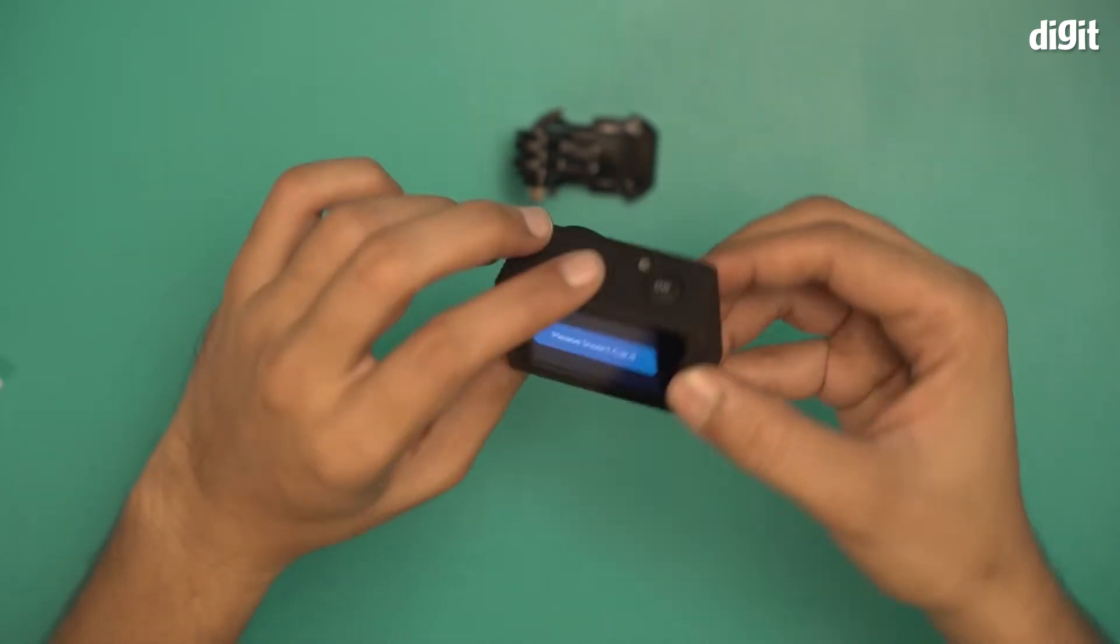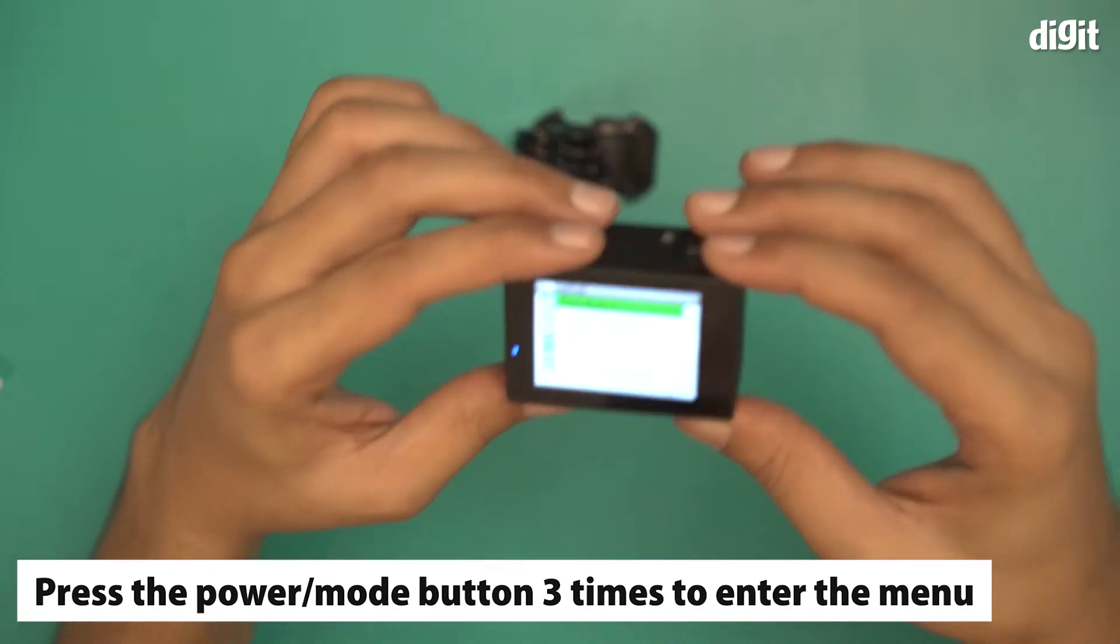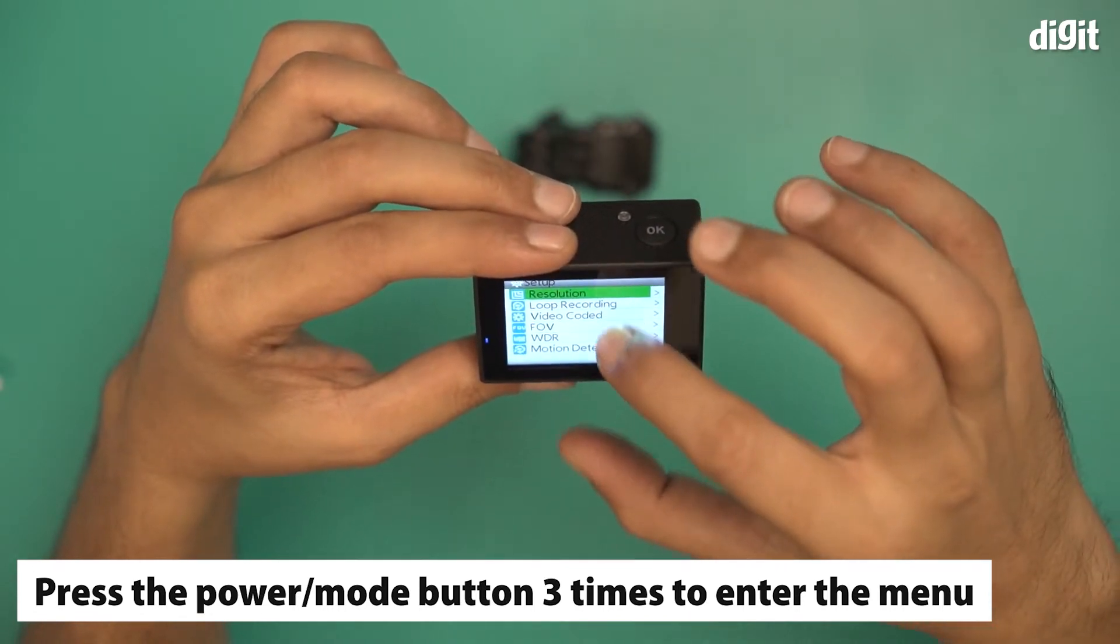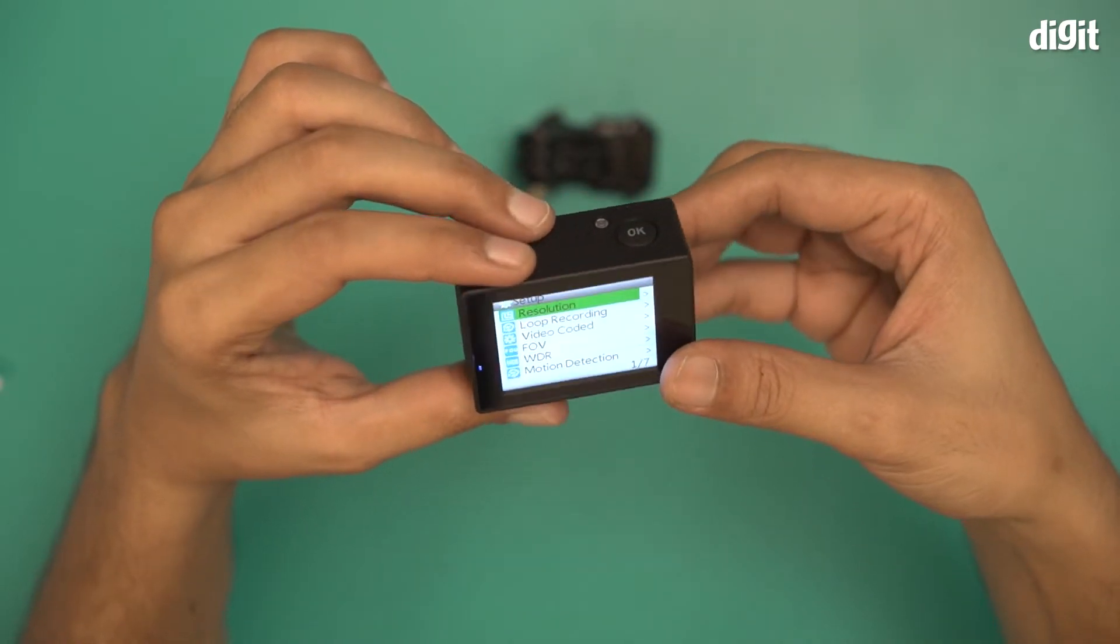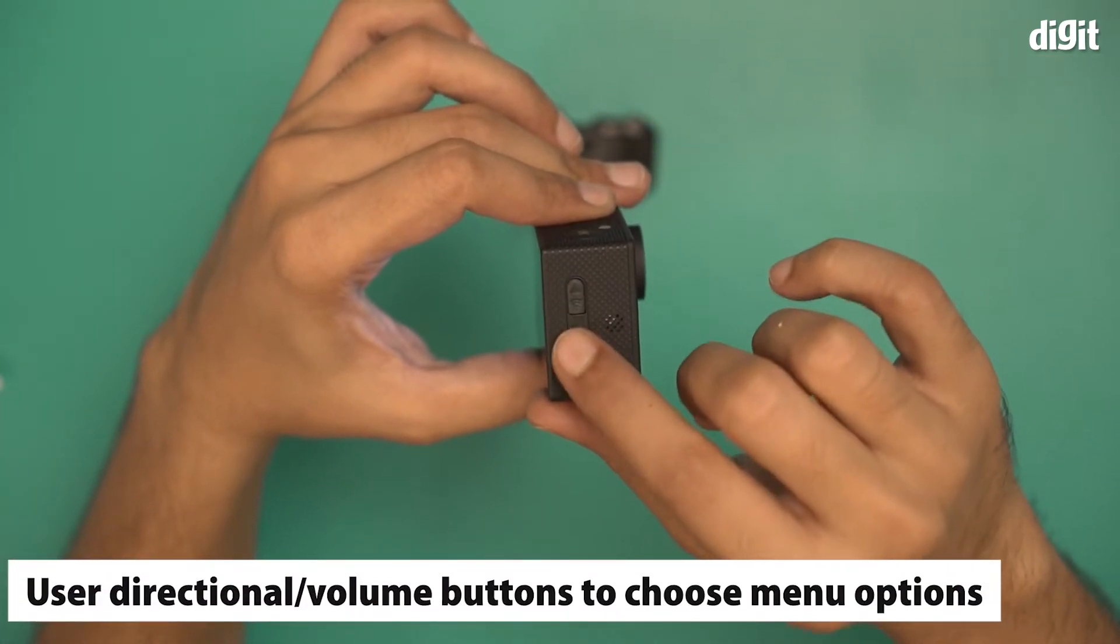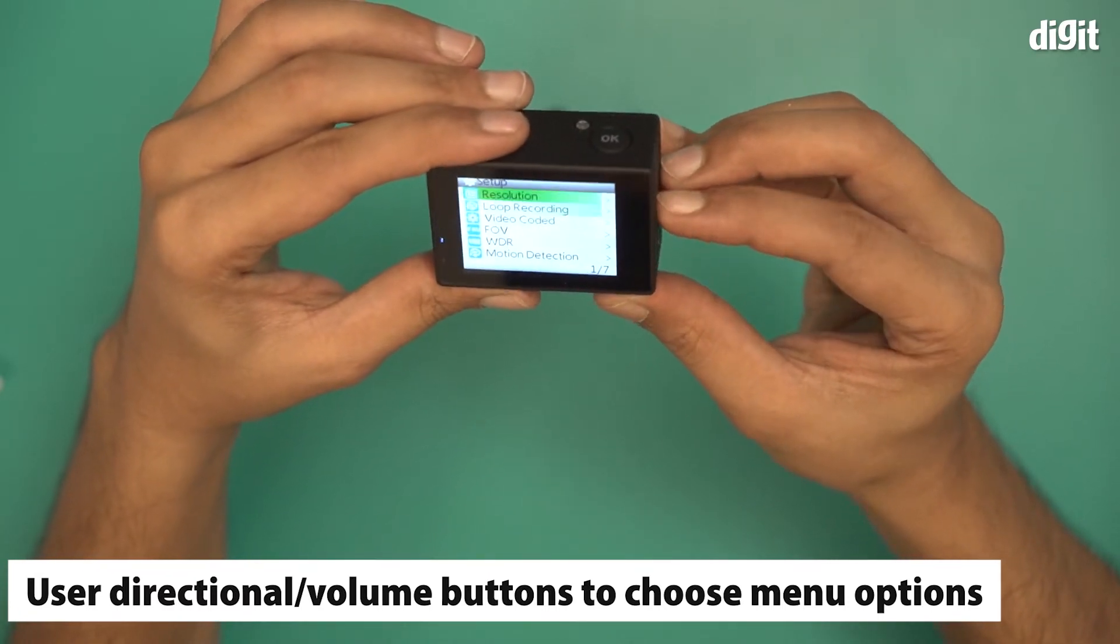If I press it a third time, it takes you to the setup menu. Now there are these directional buttons on the side. You can use these buttons to navigate through the menu like so. At the very top, you have resolution.